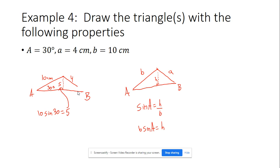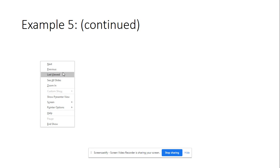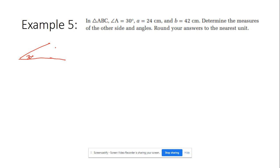Take a look at the notes in this section — they did a good job there — and then try the textbook practice. One more case: in triangle ABC, angle A equals 30°, b equals 42, and a equals 24. Determine the other sides and angles, rounded to the nearest unit. So the height equals b sine A, which is 42 times sine 30, giving 21 centimeters.